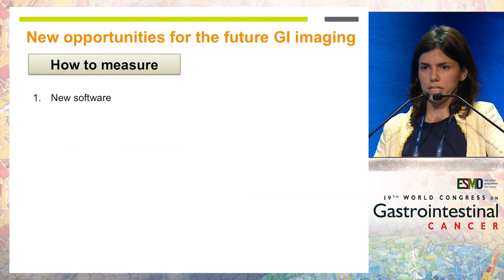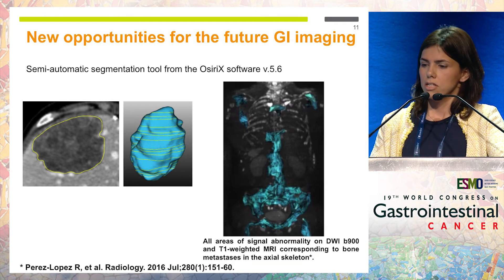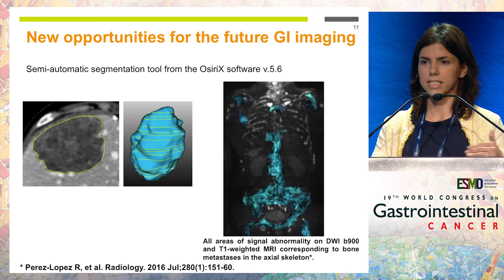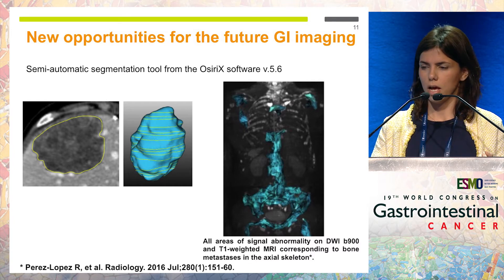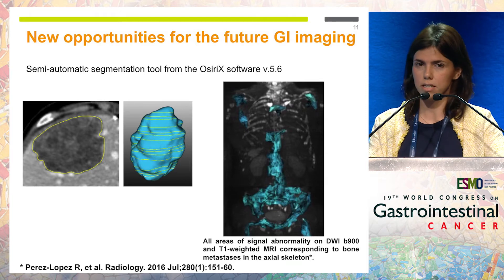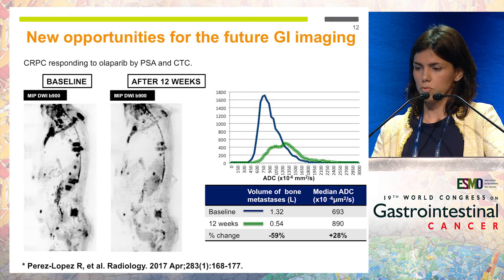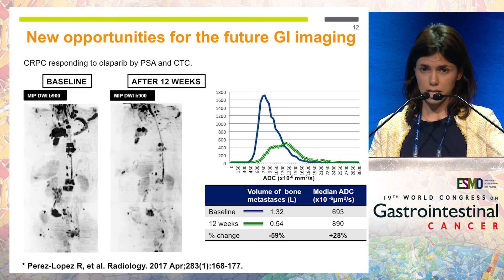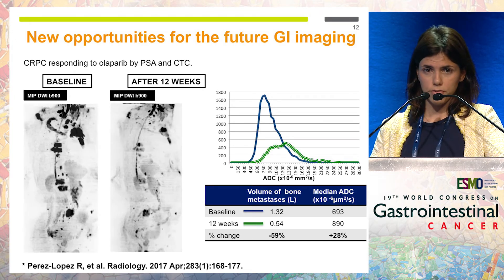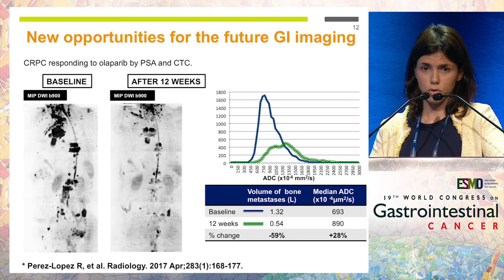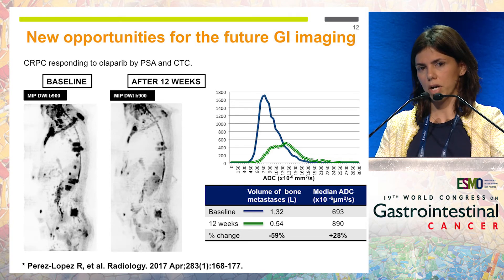How are we going to measure these new tools? We have developed new software and are working on that. Currently we give information basically about the axial plane of the tumor, but we can now give information about the total volume of the tumor and not only about a single lesion. We published a paper last year in which we assessed the total volume of bone metastasis in the axial skeleton, and we can assess changes in that volume after a few weeks of treatment. We can also give measurable information like the apparent diffusion coefficient, which informs on tumor cellularity, and analyze how those histograms change.